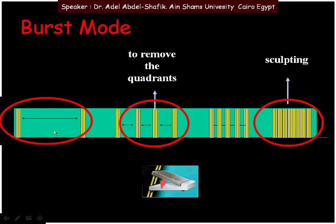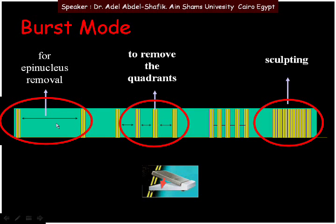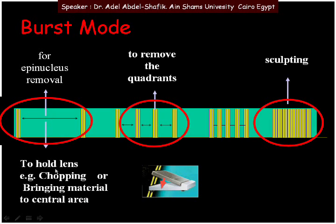With only a slight depression in position three, we have a very long off period, which is useful for removing the epinucleus using vacuum for mechanical removal, or for holding lens matter during chopping, or for bringing lens material back to the central area. By changing pedal position, we can make use of the ultrasound on and off periods as needed.